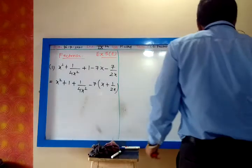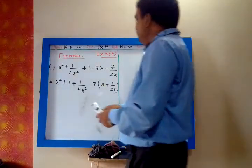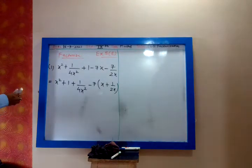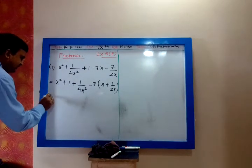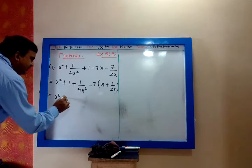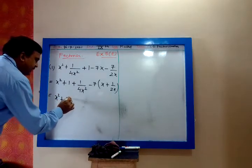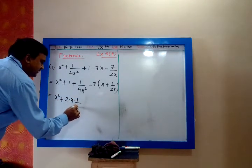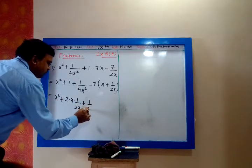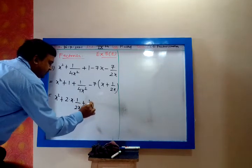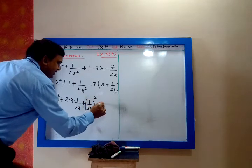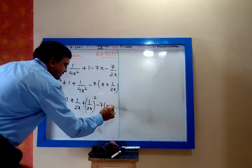I have taken the minus sign outside, so inside it will be plus. Now this I can write as x² + 1/4. This I can write as x² + 2·x·(1/2x) + (1/2x)² minus 7·(x + 1/(2x)).